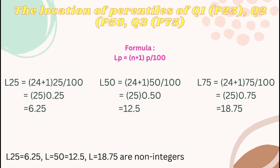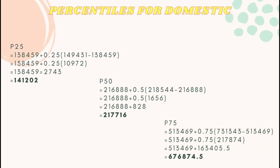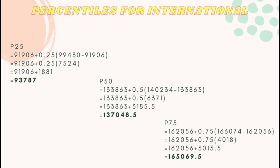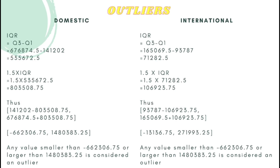The formula is LP equal to (p / 100) multiplied by (n + 1). These are the results for the location of the percentiles for P25, P50, and P75. From the result, we know that all of these are non-integers. The percentiles for domestic are: P25 = 141,202; P50 = 217,716; and P75 = 676,874.5. The percentiles for international are: P25 = 73,787; P50 = 137,048.5; and P75 = 165,069.5. The outliers for domestic are −662,306.75 and 1,480,383.25. The outliers for international are −13,136.75 and 271,993.25.